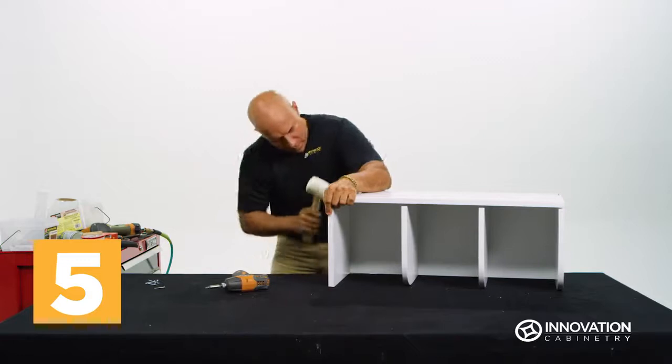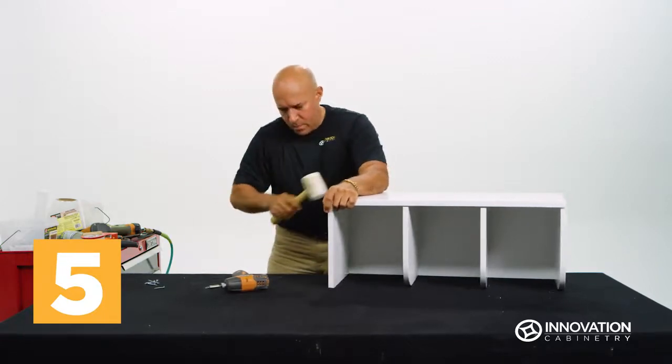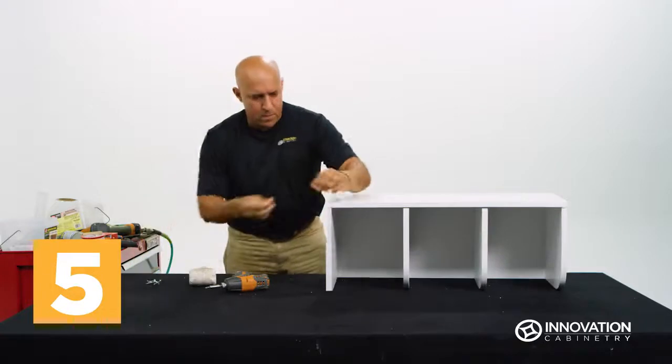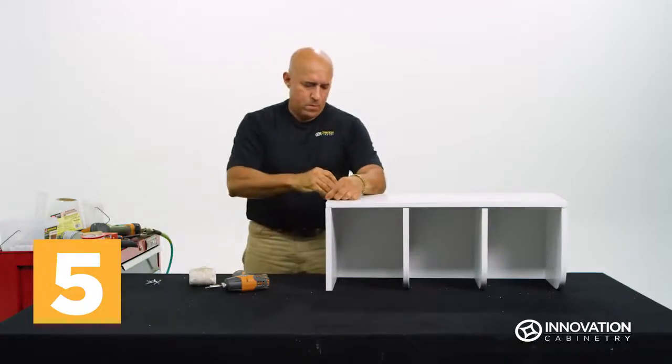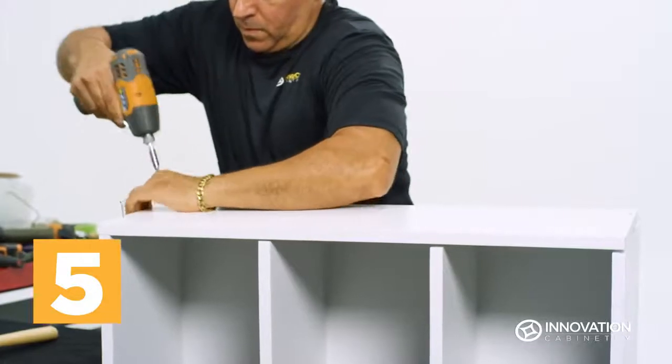This may cause the side's opposite end to lift, so use a rubber mallet to re-secure it to the rest of the assembled shelf. Once the side is again flush and aligned with the existing unit, use a drill and drywall screws to secure.